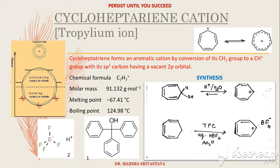Cycloheptatriene cation is C7H7 positive, and it has a molar mass of 91.132 grams per mole with a melting point of minus 67.41 degrees centigrade and a boiling point of 124.98 degrees centigrade. Cycloheptatriene forms an aromatic cation by conversion of its CH2 group to a CH positive group with its SP2 carbon having a vacant 2p orbital. This ion, also known as tropylium ion, has 6 pi electrons delocalized over carbon atoms and the positive charge is dispersed over all 7 carbon atoms.